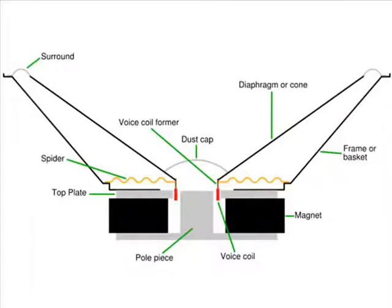From the side, we see how these various components fit together. The cone is the large circular part that we can see, and the part that moves back and forth to create the pressure waves that we perceive as sound.